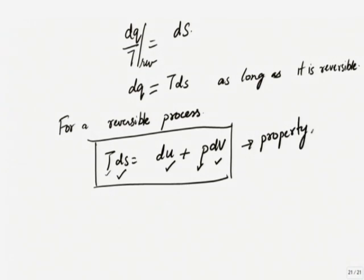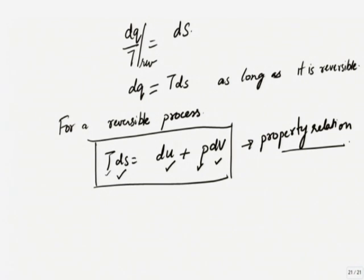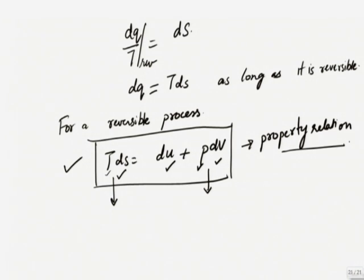There is no question of the process. This is a property relationship — it has nothing to do with the process because I am just connecting properties. People often think that TdS is dQ like the first law — that is the wrong way of thinking. This by itself is only a property relationship. In a reversible process it will turn out that TdS is dQ and PDV is W.